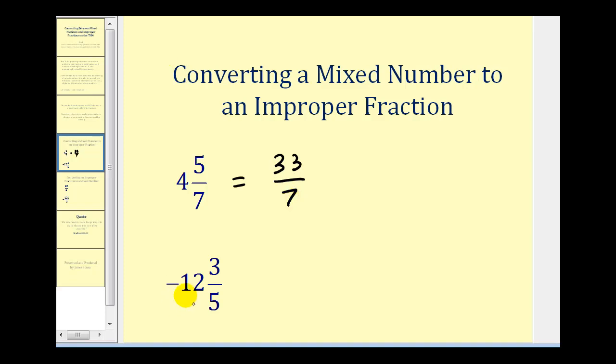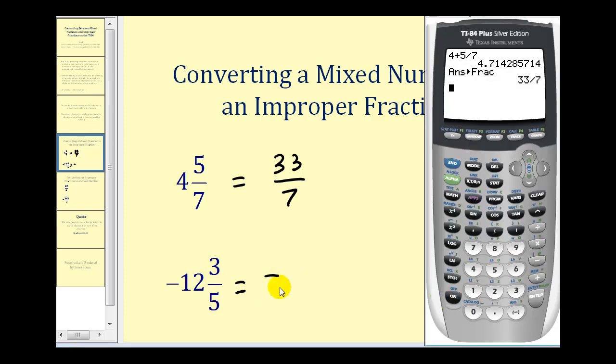Looking at the next example we have negative twelve and three-fifths. We know our mixed number is going to be negative, so we're going to enter into the calculator twelve plus three-fifths, and then the result will be negative. Three divided by five is how we enter in three-fifths. Press enter.